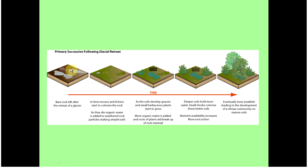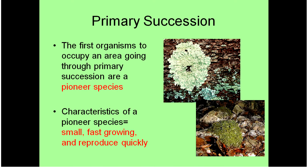So let's say we have this bare rock that's left after a glacier has melted. We have some pioneer species, and a good example of a pioneer species might be a moss or a lichen. A lichen is going to be a symbiotic relationship between an algae and a fungus — so it's actually two organisms living together. This picture up top is a lichen; I'm sure you've seen them on trees before.